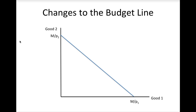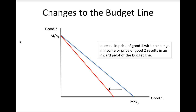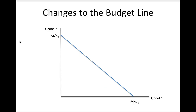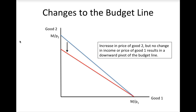If the price of good 1 increases but the price of good 2 and income remain the same, then the consumer can buy fewer units of good 1 if she spends all her money on it. However, she can still buy the same amount of good 2 if she spends all income on good 2. Thus, the budget line will pivot inward. Similarly, if the price of good 2 increases but price of good 1 and income remain the same, the budget line will pivot downward to reflect reduced ability to buy good 2. You should think about what would happen if prices decrease, if both prices change, or if some combination of prices and income change — you will practice these in team exercises.